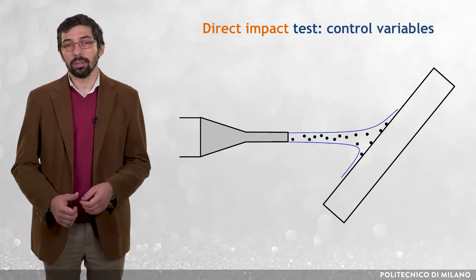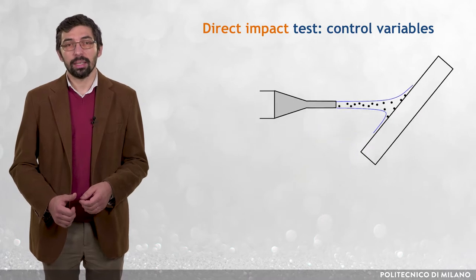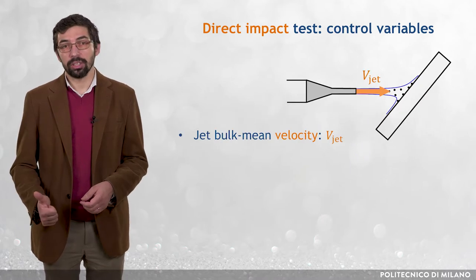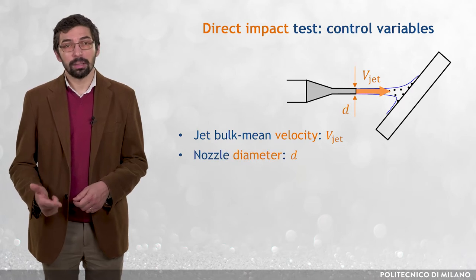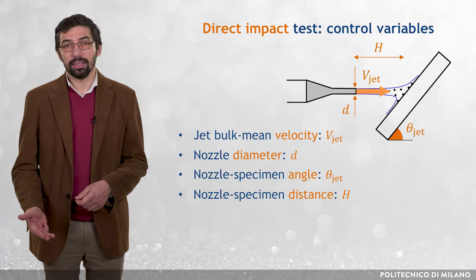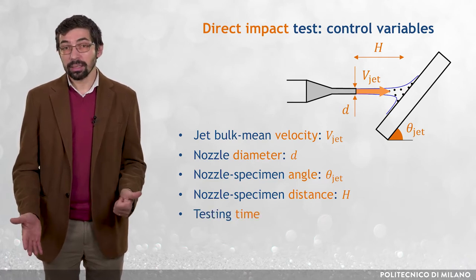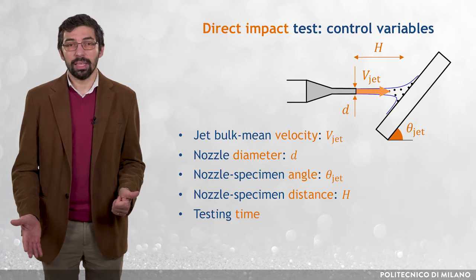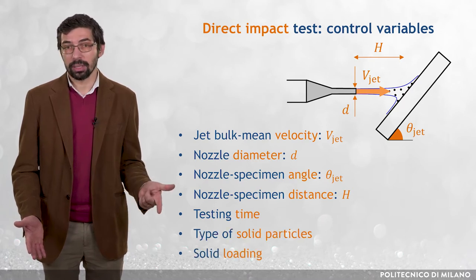The control variables in a direct impact test are the jet bulk mean velocity Vjet, the nozzle diameter D, the nozzle-specimen angle ThetaJet, the nozzle-specimen distance H, the testing time, and the characteristics of the particle-laden flow, namely the type of solid particles and solid loading.